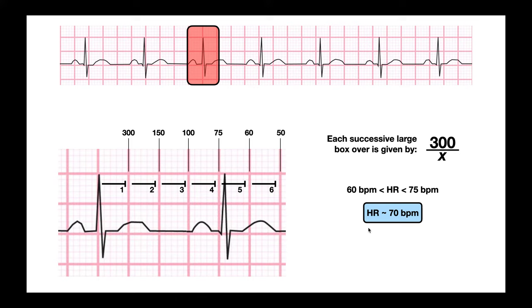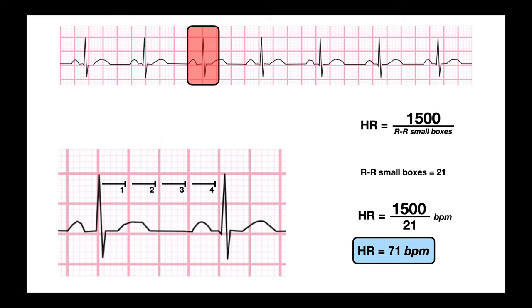This method is nothing more than an approximation. It's not as accurate as the 1500 method. But the nice thing is it doesn't require a calculator. However we should still get something similar to what we got in the 1500 method because it's the same EKG pattern. In the 300 method we estimated about 70 beats per minute. In the 1500 method we got 71 beats a minute which is very close. Hopefully this video gave you a good understanding of two methods to calculate heart rate given a regular EKG pattern.